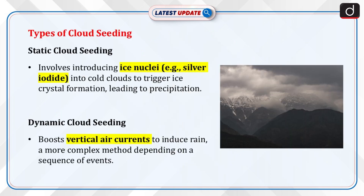Moving on to the types of cloud seeding. First, Static cloud seeding: this method involves introducing ice nuclei, such as silver iodide or dry ice, into cold clouds that have supercooled liquid water droplets. The ice nuclei trigger the formation of ice crystals or snowflakes, which grow at the expense of the liquid droplets and fall as precipitation.